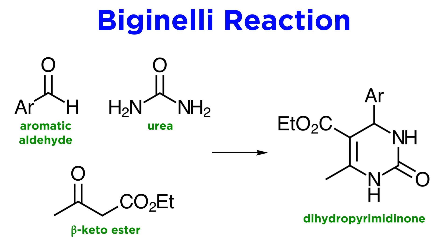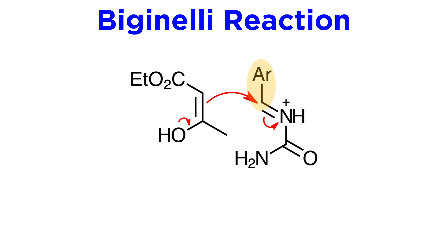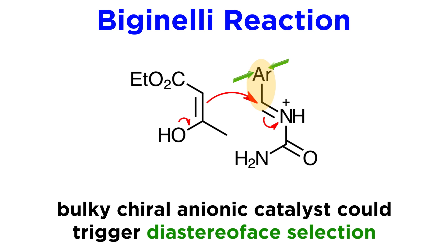Just as with the previous two reactions we investigated, you will have noticed that this reaction forms a chiral product, containing a stereogenic center at the carbon that was previously the carbonyl carbon of the aldehyde. Given that this reaction is of great synthetic importance for medicinal chemists, it is not surprising that chemists have tried to create an enantioselective version. Many of the attempts have used catalytic reactions — more precisely chiral acids as promoters. If one looks at the protonated carbamoyl iminium intermediate, the presence of a bulky chiral anion in the vicinity of the electrophile, most likely by formation of a tight ion pair, may trigger diastereofacial selection during the attack of the enol nucleophile onto the iminium species.